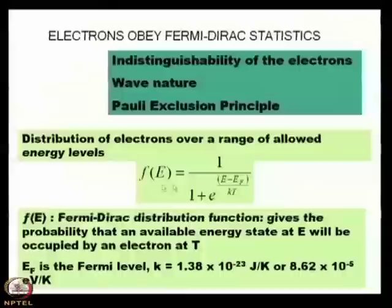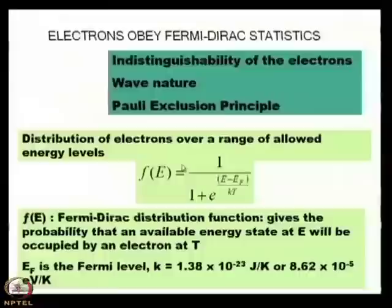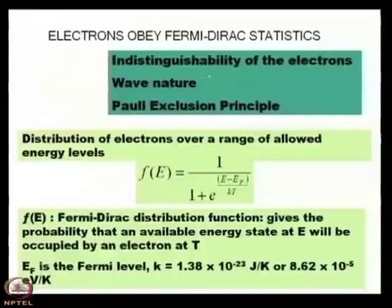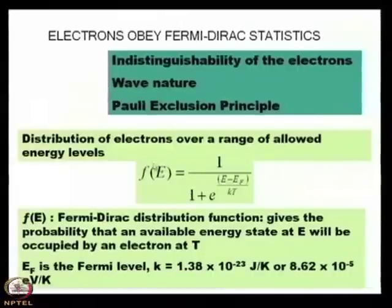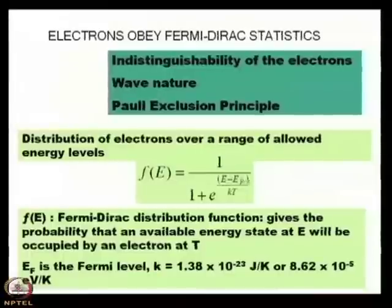When we deduce something related to the Fermi-Dirac distribution, or the distribution of electron energy states, it has been derived using three assumptions: indistinguishability of electrons, wave nature of electrons, and the Pauli exclusion principle. On the basis of these, the Fermi-Dirac statistics have been derived, given by f(E) = 1 / (1 + e^((E - E_f) / kT)).